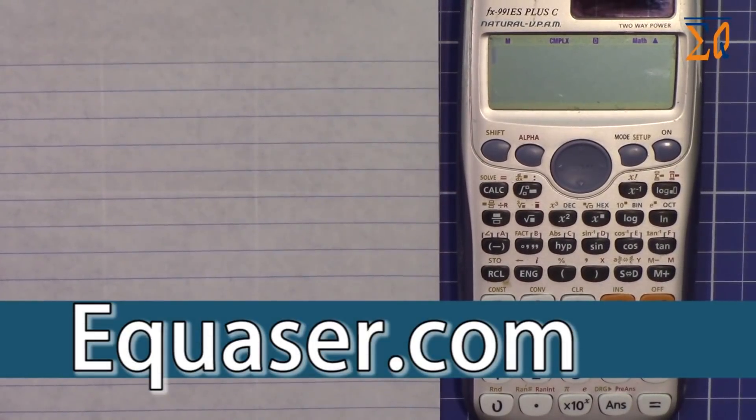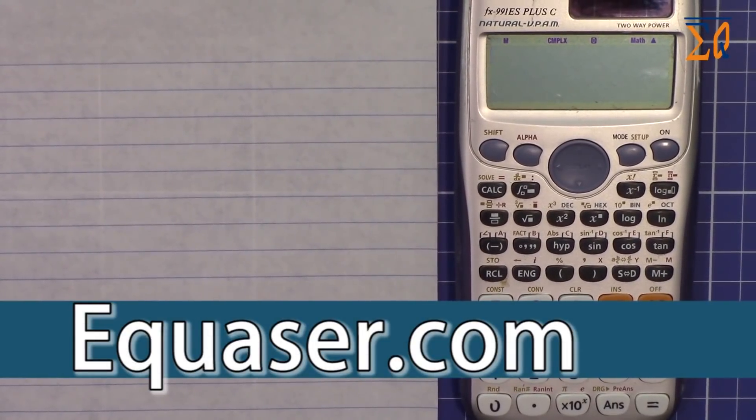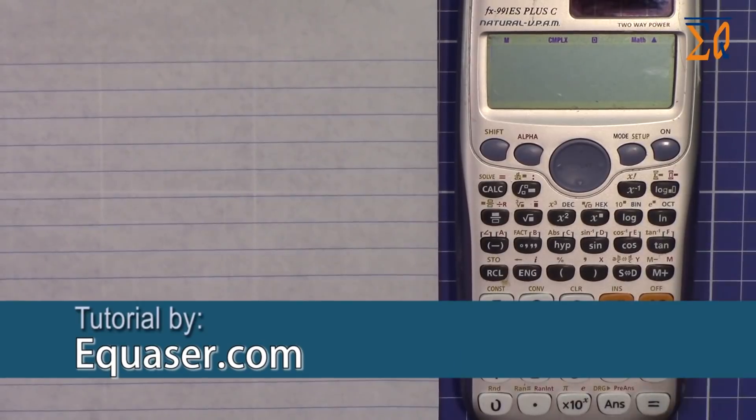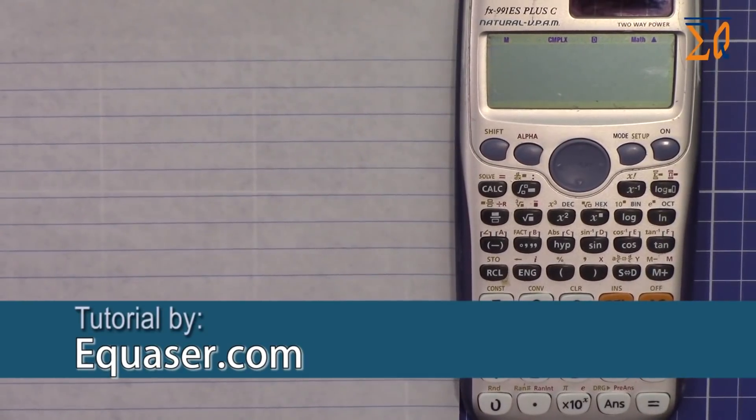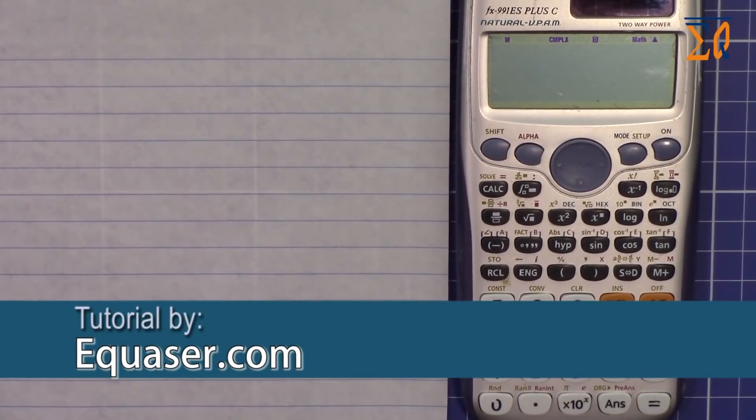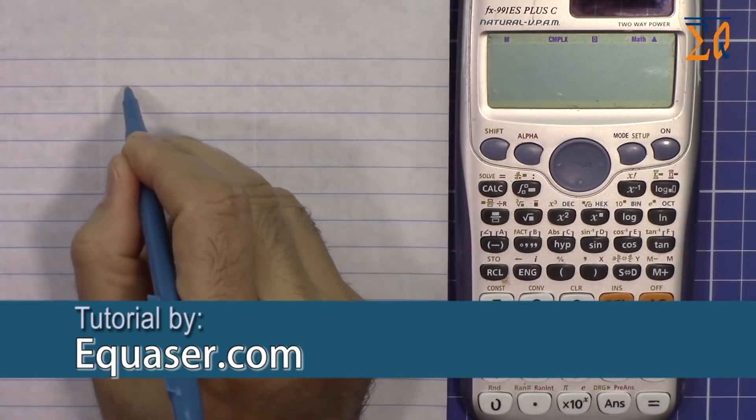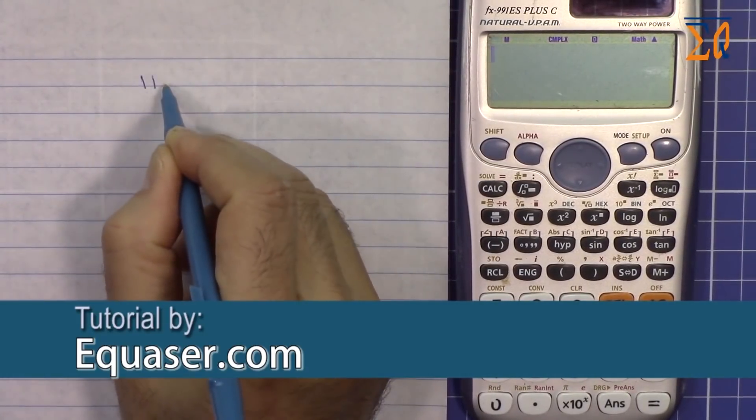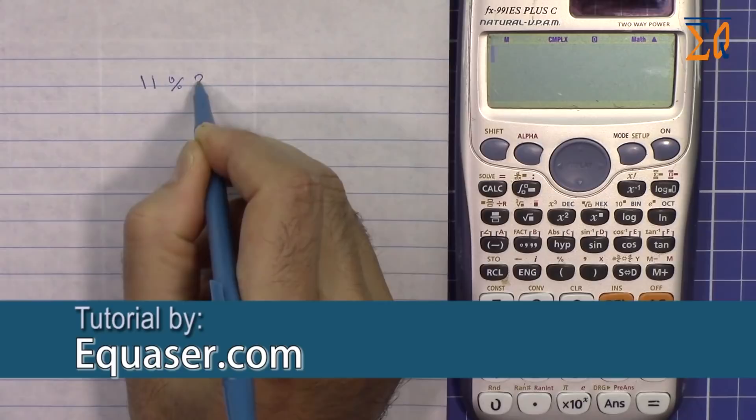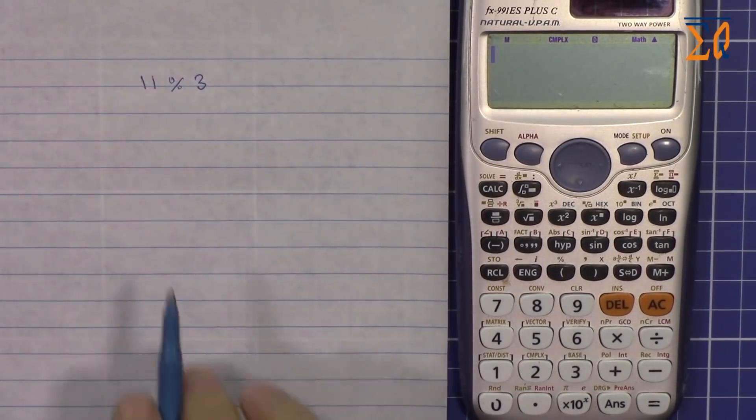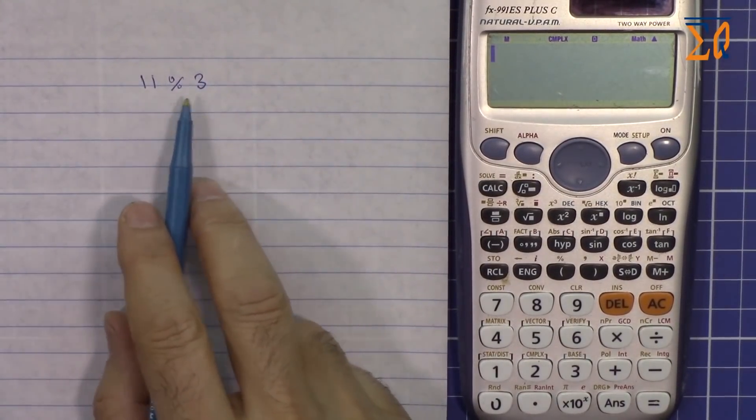Welcome to another video from Equator.com. In this video I'm going to show you how to find the remainder or modulus of a calculation. So let's say you have 11 modulus 3, this will be read as 11 modulus 3.